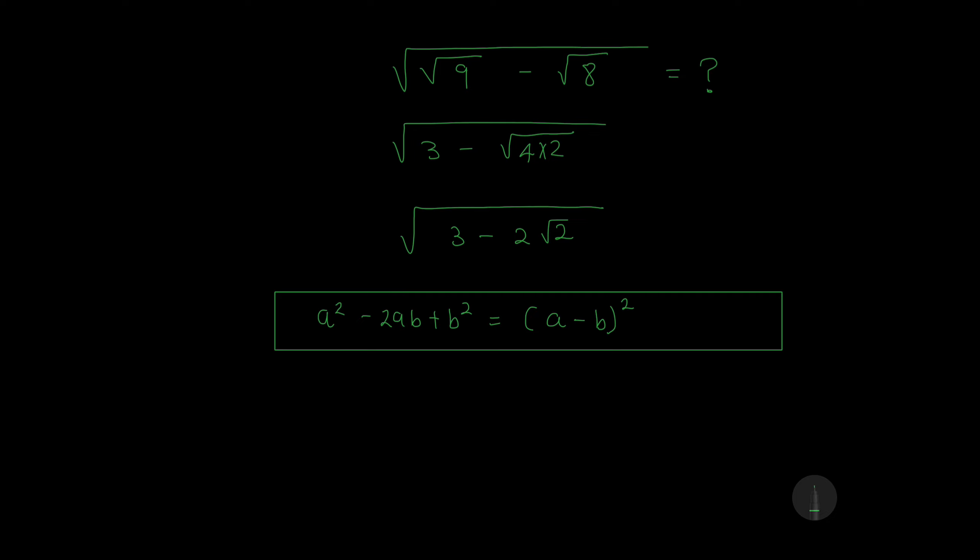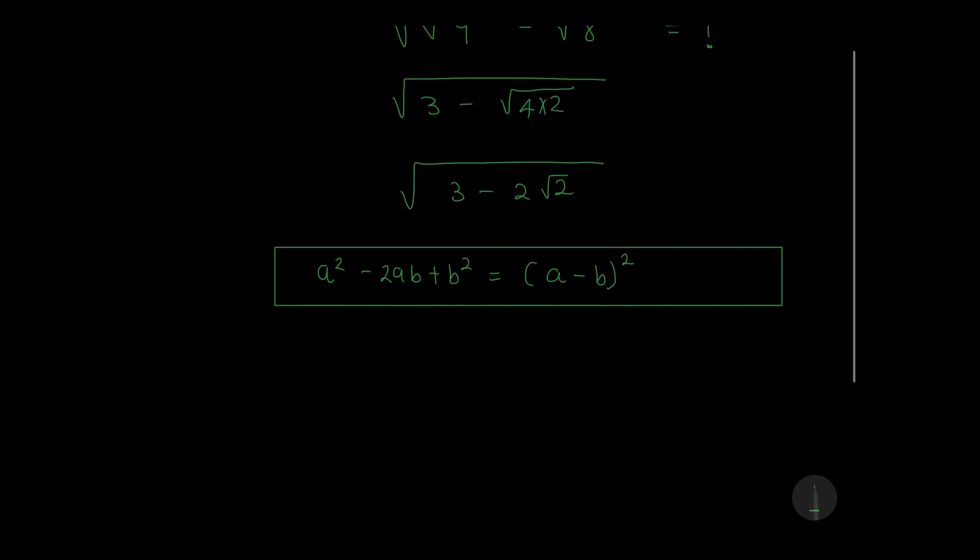3 can be written as 2 plus 1, and then notice that here we have a multiplied by b. a is square root of 2 and b will be 1.